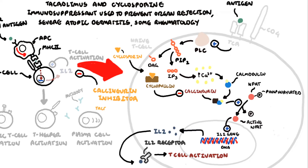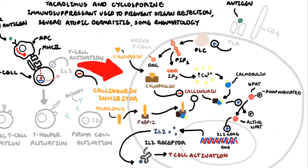Tacrolimus is the other calcineurin inhibitor, which binds to an intracellular protein called FKBP12. It then forms a complex consisting of tacrolimus-FKBP12, calcium, calmodulin, and calcineurin, which will inhibit the phosphatase activity of calcineurin. When the phosphatase activity is inhibited, NFAT doesn't get dephosphorylated.